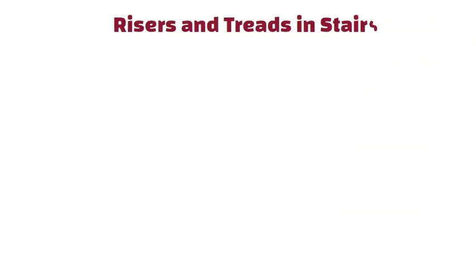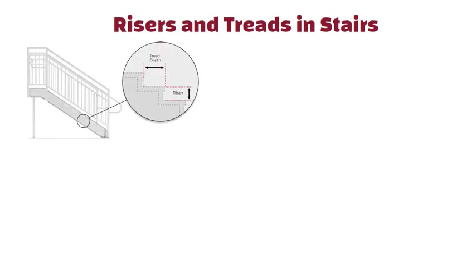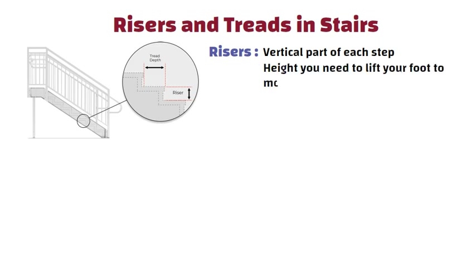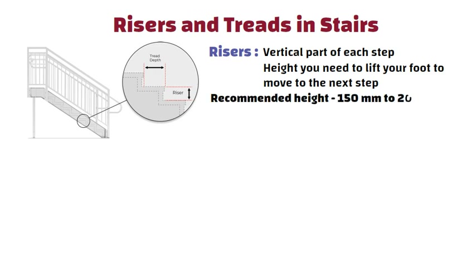Risers and Treads in Stairs: When building stairs, two important parts help you step safely. 1. Risers: This is the vertical part of each step — the height you need to lift your foot to move to the next step. The recommended height for a riser is 150 mm to 200 mm, which is about 6 to 8 inches. This makes it easy to walk up the stairs without feeling too steep.